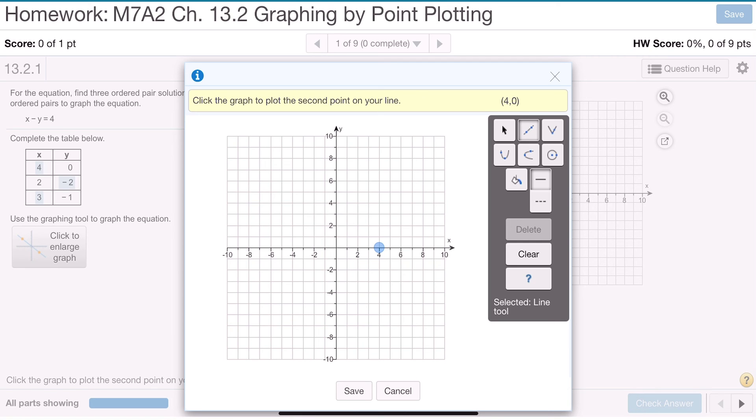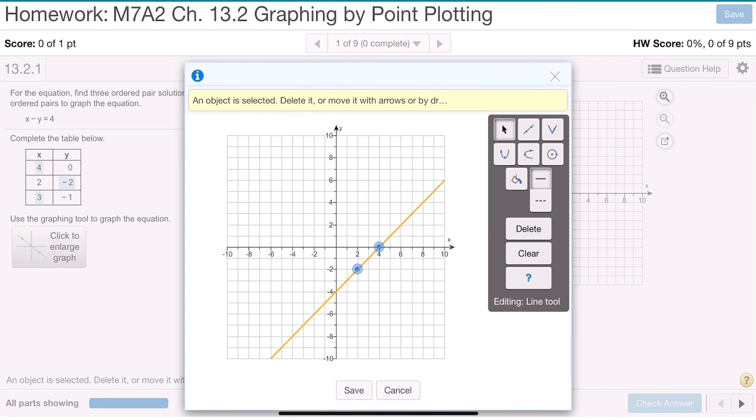The next ordered pair I'd like to use is 2, negative 2. You could use 3, negative 1. We'll all get the same answer. So, from here, I'm going to go over 2 and down 2. And I'm going to put another dot. And you see that as soon as you put that second dot, a gold line is drawn on your graph paper.